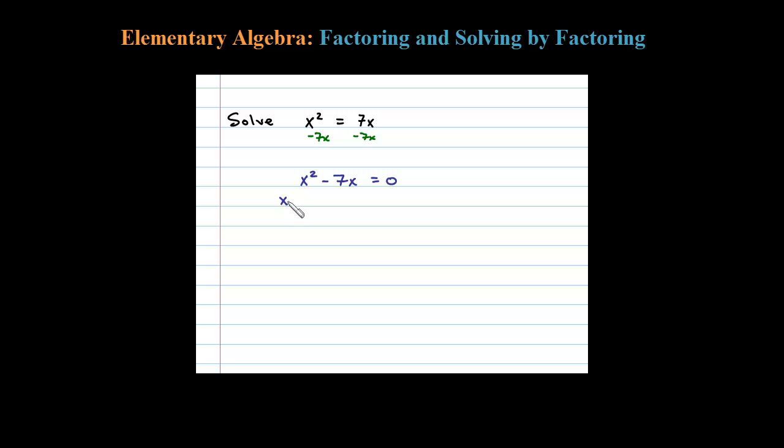In this case there's a GCF, so if I factor out an x, what will be left here is x - 7. Then use the zero property. You set each factor equal to 0.